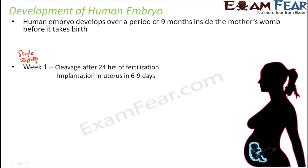After that, repeated mitotic divisions take place very rapidly. As a result, this single-celled zygote gives rise to a 2-celled body, then a 4-celled body, 8-celled body, 16-celled body, and so on. Gradually a structure is formed which is known as the blastocyst — so from the zygote, after repeated divisions, a blastocyst is formed.